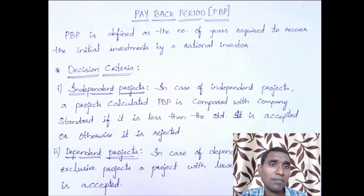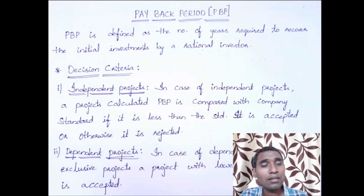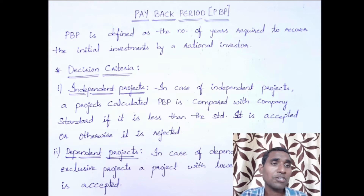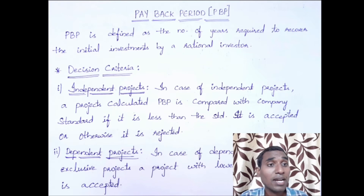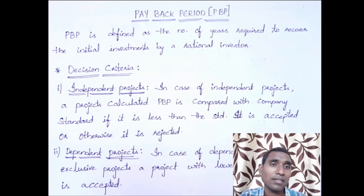If your calculated payback period is less than the standard, the project should be accepted. If your answer is more than the standard specified, your decision should be to reject the proposal. For example, if your calculated payback period is two years and the company standard is one year, reject it. If the standard is three years and your calculated period is two years, accept the project.